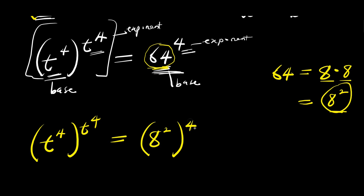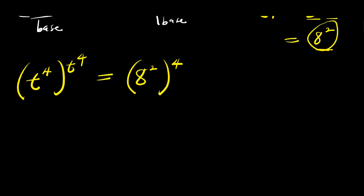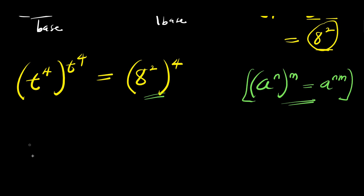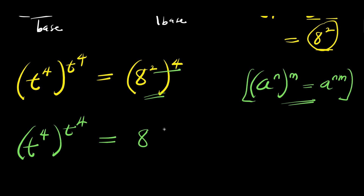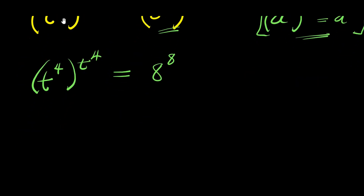And this is raised to the power of 4. Now I can apply the index law again: a to the power of n, raised to the power of m, equals a to the power of n times m. So the right side becomes 8 to the power of 2 times 4, which is 8 to the power of 8. Now the base equals the exponent on both sides. By the identity: if a to the power of a equals b to the power of b, then a equals b.